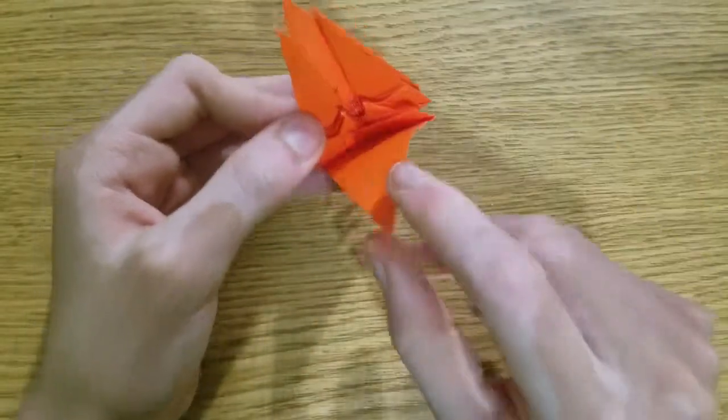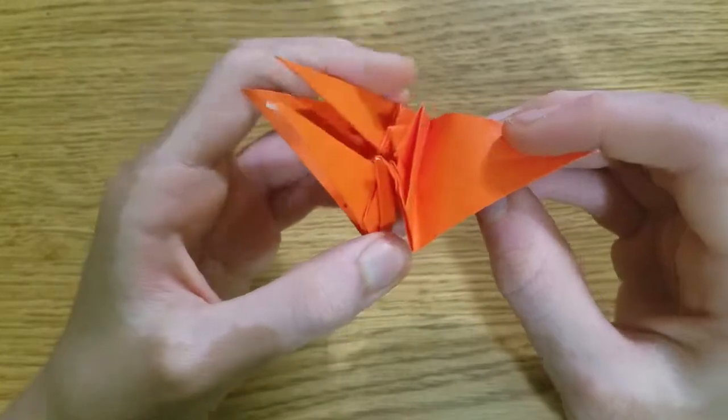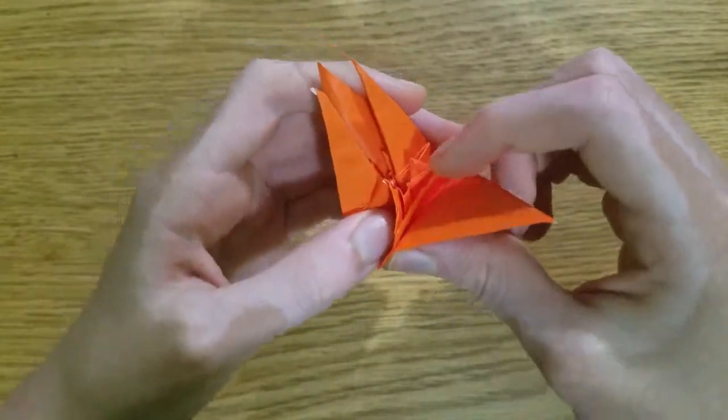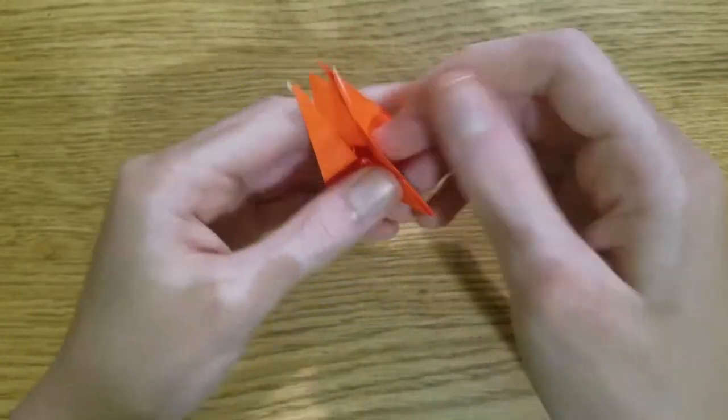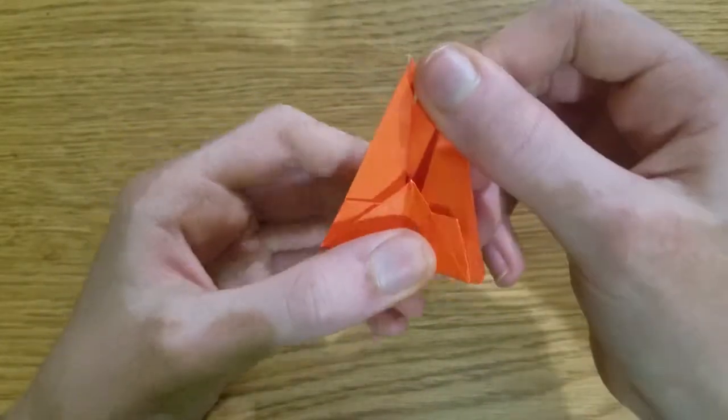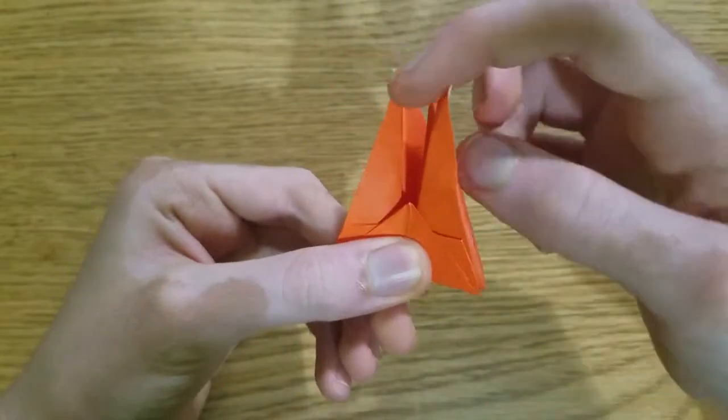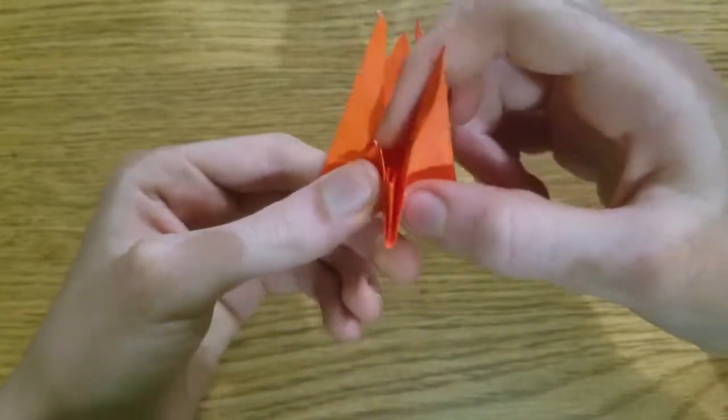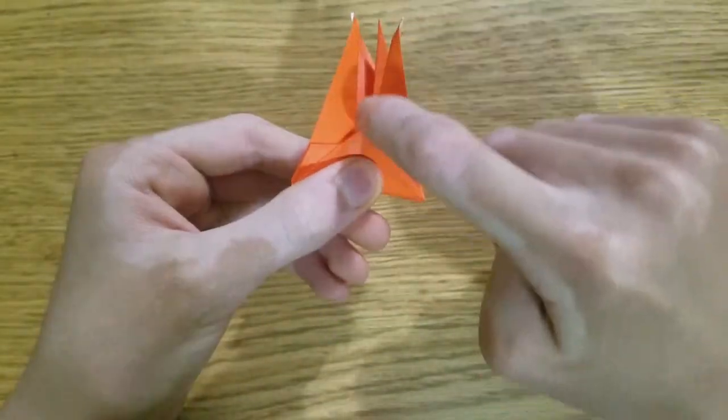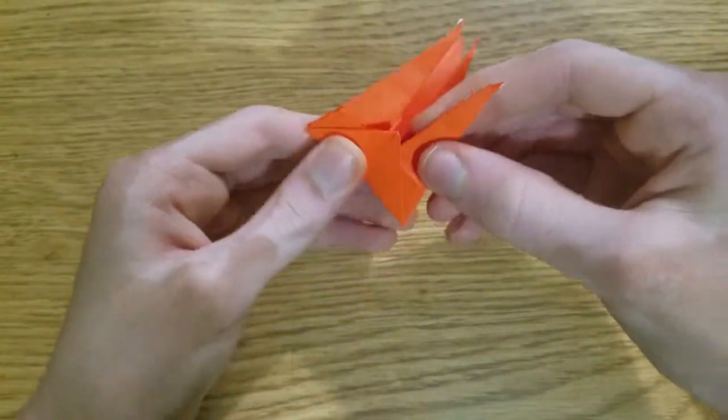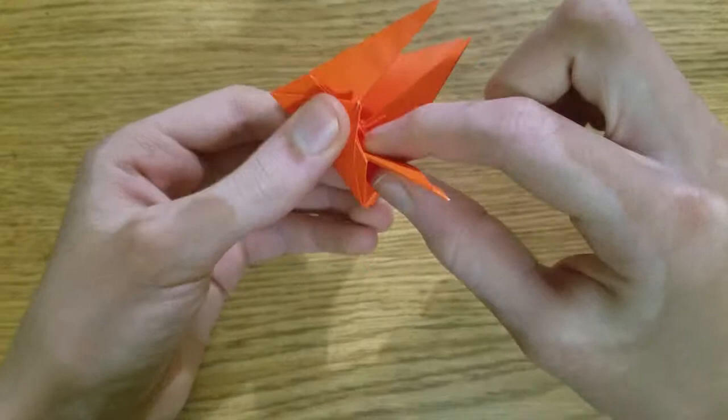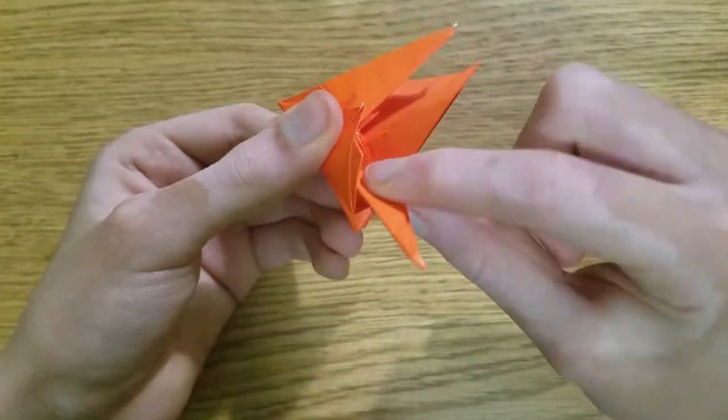Now just pick one of these big flaps. We're going to inside reverse fold so that this edge is aligned with this edge. Now I'm going to show you how to pre-crease it first, but you don't need to. Fold it.